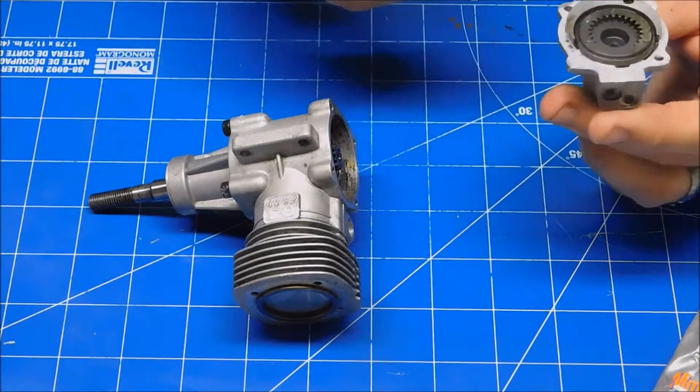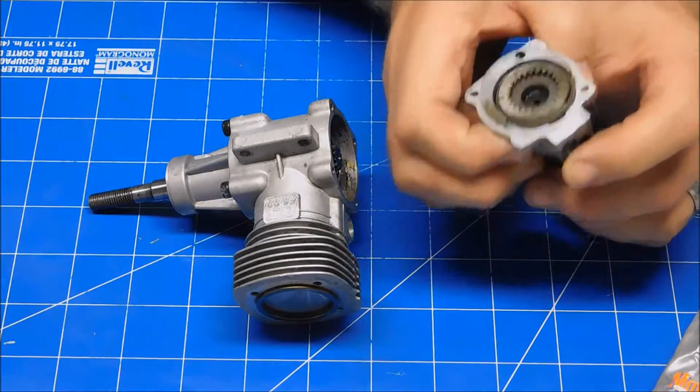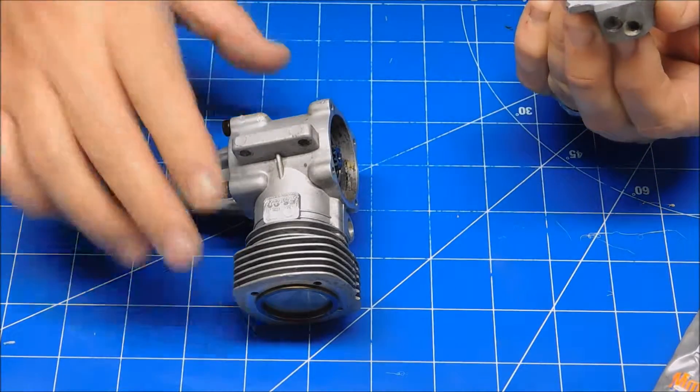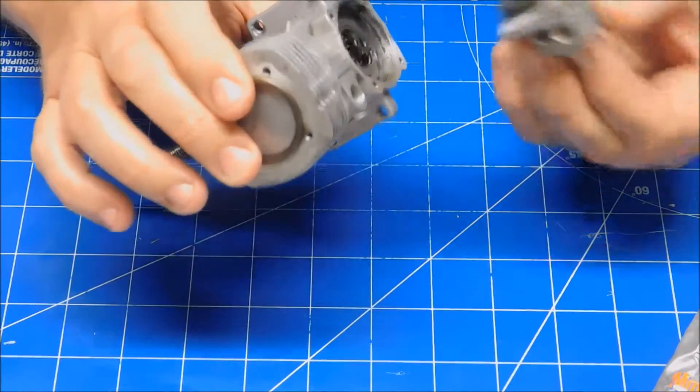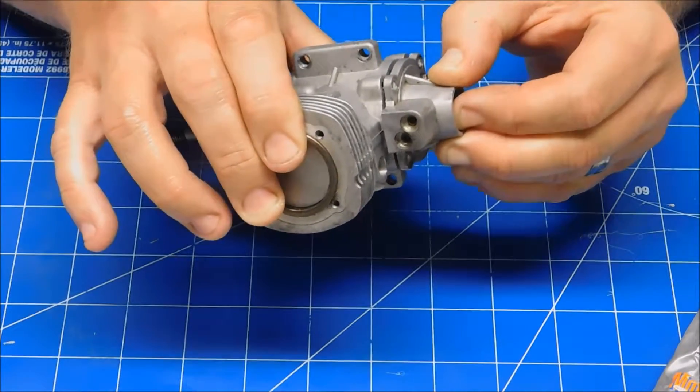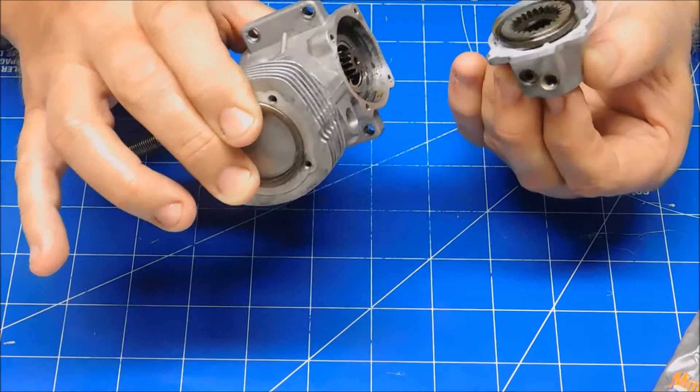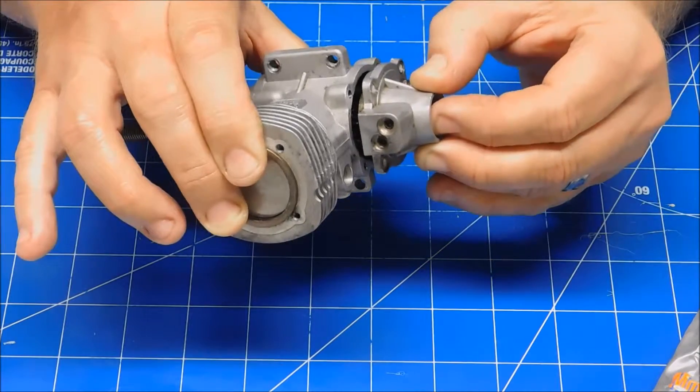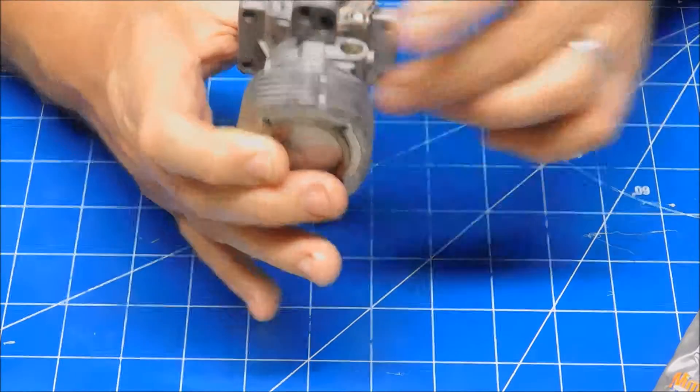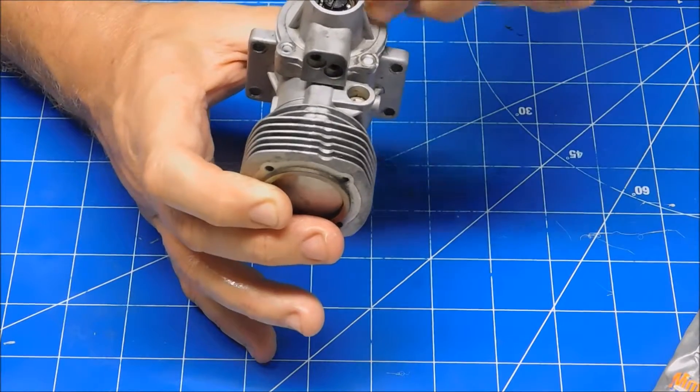Alright, so I'm going to set my timing gear, timing dot at the bottom, and hold that in place with this finger, make sure my crankshaft is still at top dead center, and put these two things together. That should be timed, a couple screws in here and I can verify it.